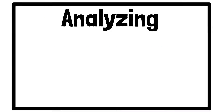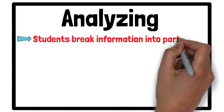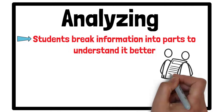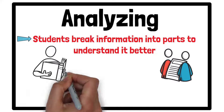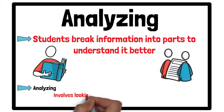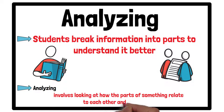Analyzing is the fourth level. Students break information into parts to understand it better. They might compare and contrast two theories or examine the motives of characters in a novel. Analyzing involves looking at how the parts of something relate to each other and to the whole.